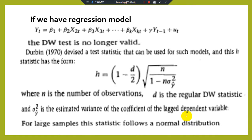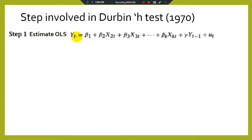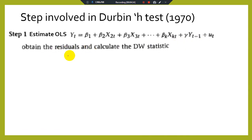For large samples, the Durbin H-test follows a normal distribution. Steps involved in the Durbin H-test: Step 1 — estimate OLS. If you have a regression model with independent variables X_2, X_3, and so on up to X_k, and with the lagged dependent variable as an explanatory variable, from here you have to calculate your residuals.